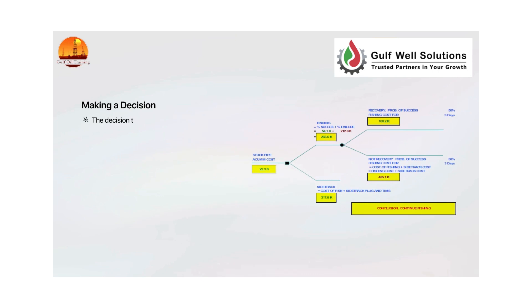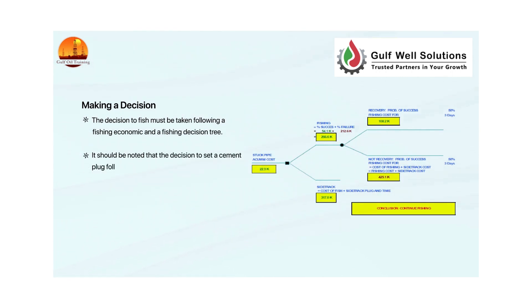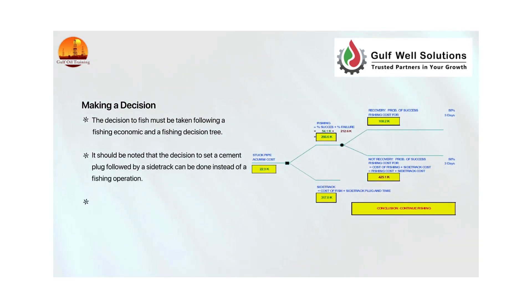The decision to fish must be taken following a fishing economic analysis and a fishing decision tree. It should be noted that the decision to set a cement plug followed by a sidetrack can be done instead of a fishing operation. Let us have a look at an example.